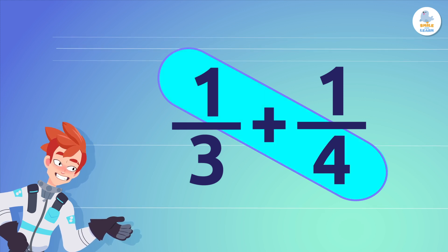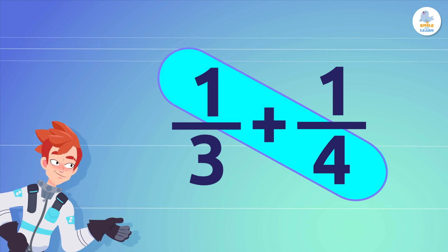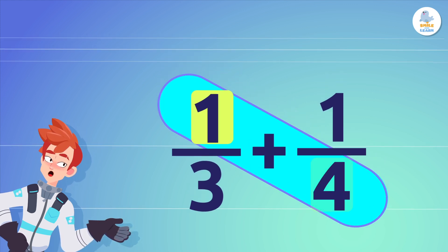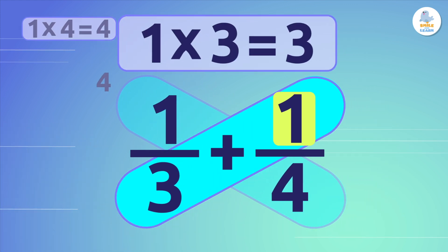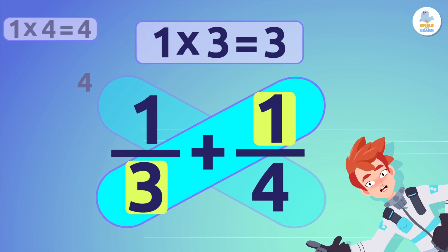First, we start with the butterfly wings and cross multiply. So, we multiply 1 times 4, which gives us 4. We write it down here. 1 times 3 equals 3, and we write it down here.